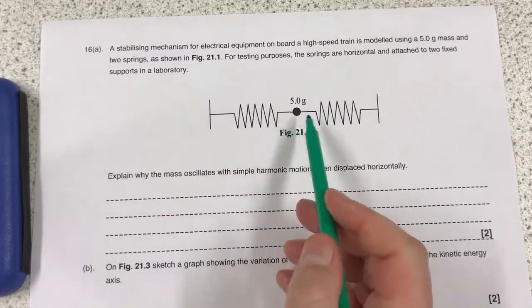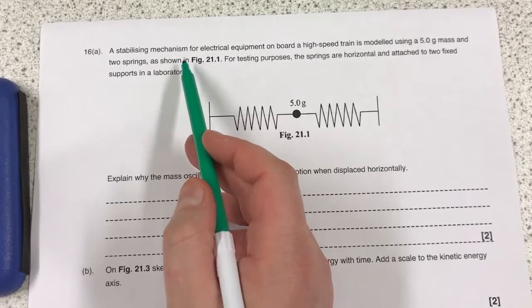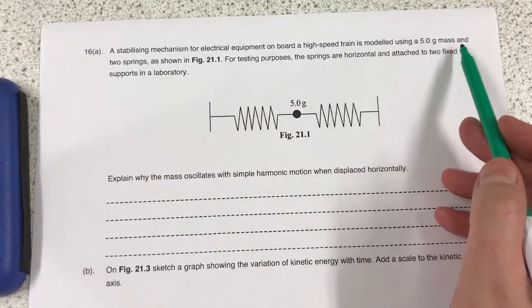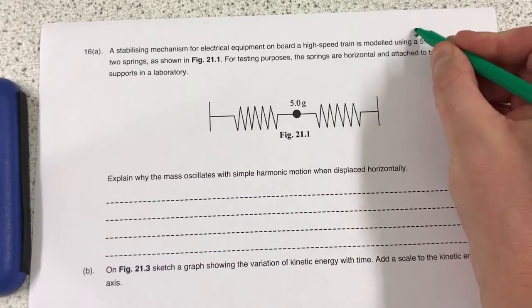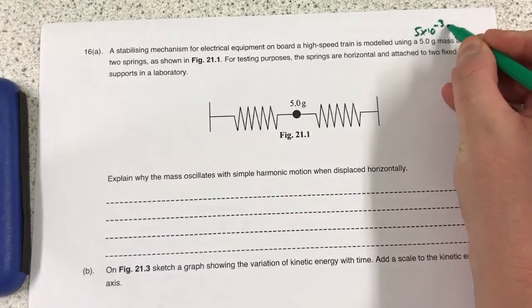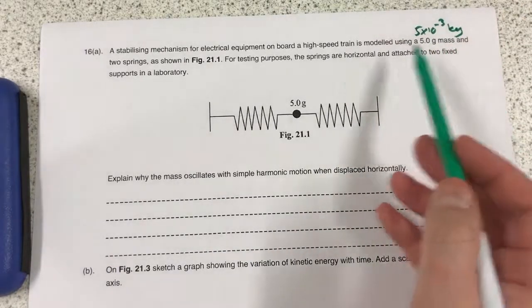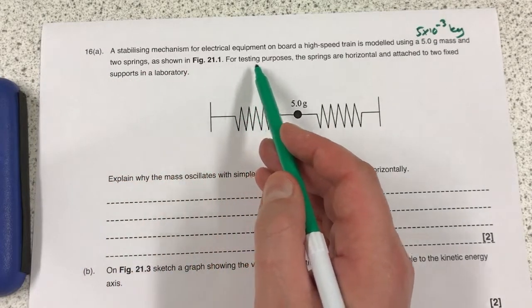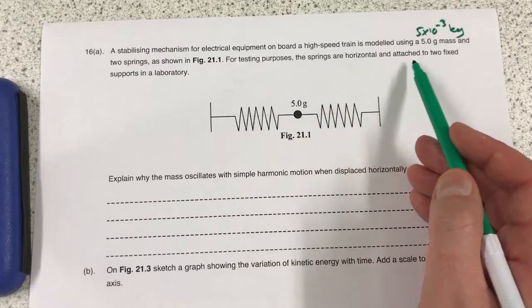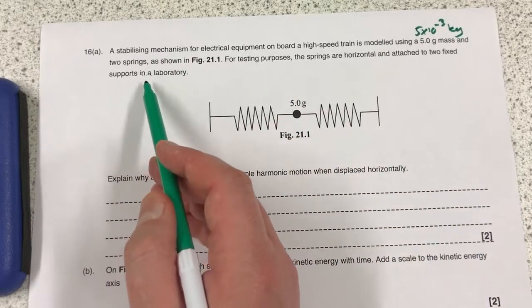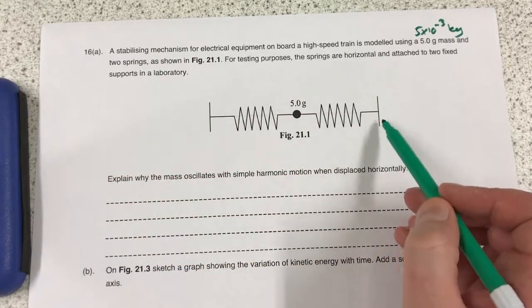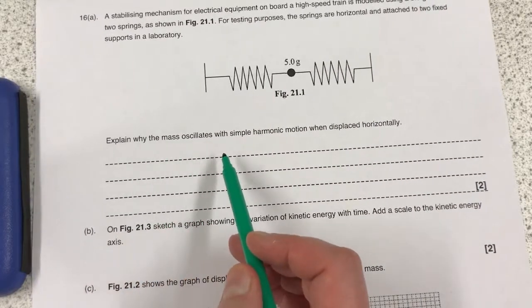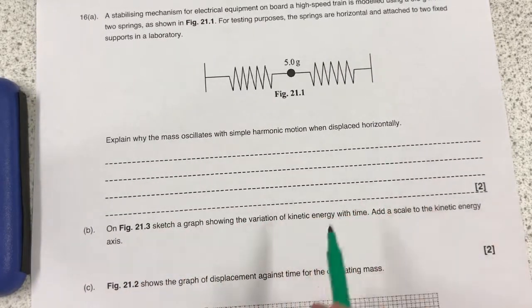Question 16 about a mass between two springs. A stabilizing mechanism for electrical equipment on board a high-speed train is modeled using a 5g mass. So it's going to be 5 times 10 to the minus 3 kg. Just watch out for that. And two springs as shown in figure 21.1. For testing purposes, the springs are horizontal and attached to two fixed supports in a lab. So these must be the two supports. There's your mass, there's your two springs. Explain why the mass oscillates with simple harmonic motion when displaced horizontally.